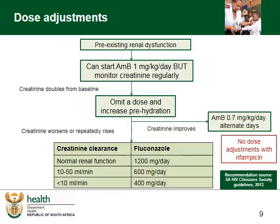If the serum creatinine improves, Amphotericin B may be restarted at 0.7 mg per kg per day and alternate day treatment should be considered. If the creatinine was normal initially and now stays elevated, or if the creatinine is worsening, Amphotericin B should be stopped and fluconazole used, adjusted as necessary for the reduced kidney function as outlined in the table. Of concern is that the guideline does not specify a creatinine cutoff when starting Amphotericin B. All patients with very high creatinine must be discussed with a nephrologist or a physician.